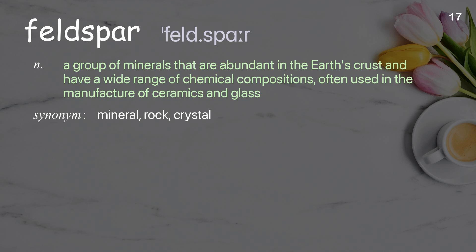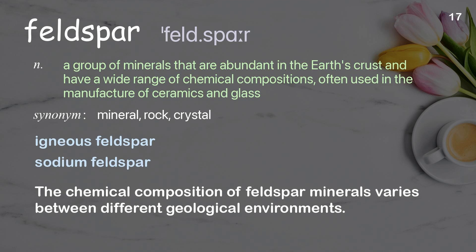Feldspar. A group of minerals that are abundant in the Earth's crust and have a wide range of chemical compositions, often used in the manufacture of ceramics and glass. Examples: Igneous feldspar. Sodium feldspar. The chemical composition of feldspar minerals varies between different geological environments.